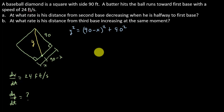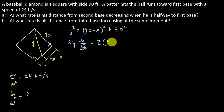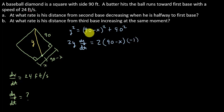We've got our equation. Taking the derivative with respect to T: 2Y times dy/dt is equal to, using chain rule, 2 times (90 minus X) times the derivative of what's inside the parentheses. The derivative of (90 minus X) is negative 1, times dx/dt. Then the derivative of 90 squared is just 0.